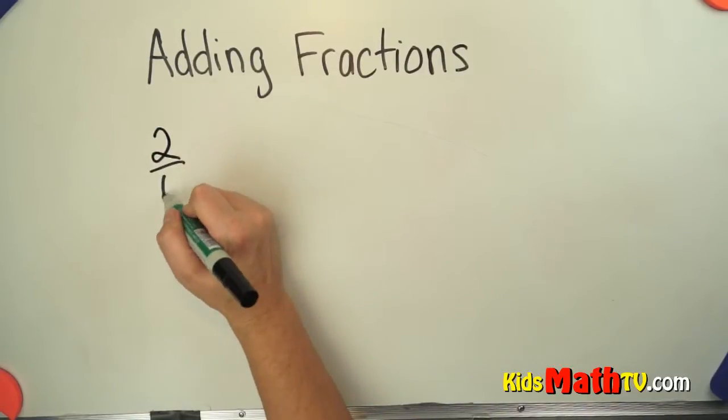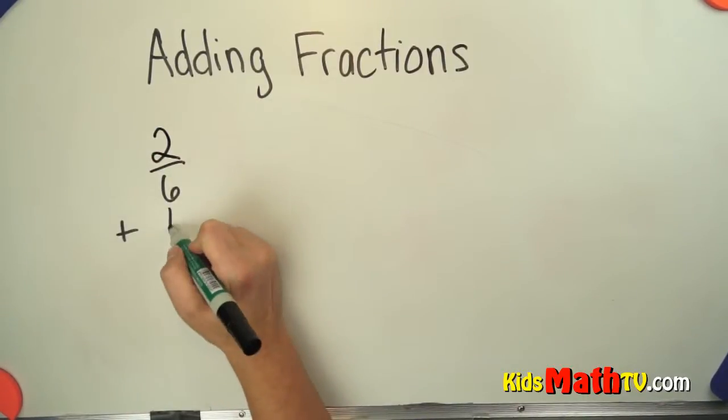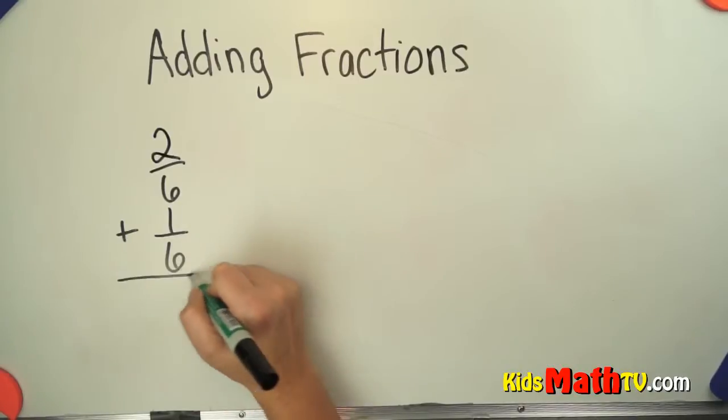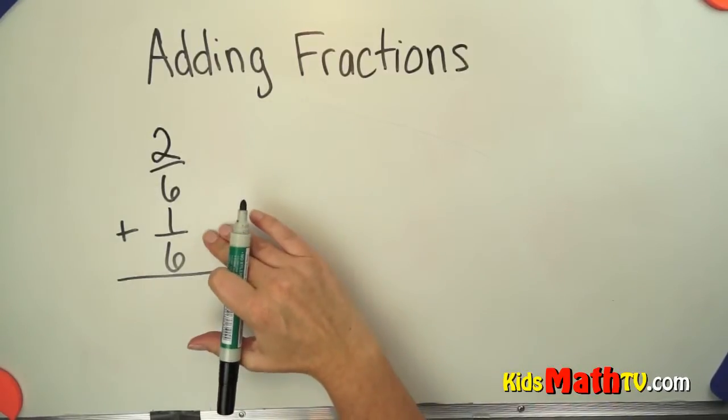So if we have 2 sixths and we want to add it to 1 sixth, so if we have 2 sixths and 1 sixth,